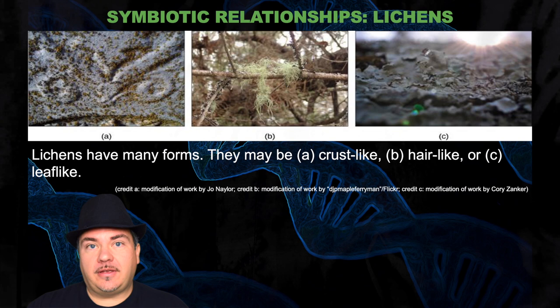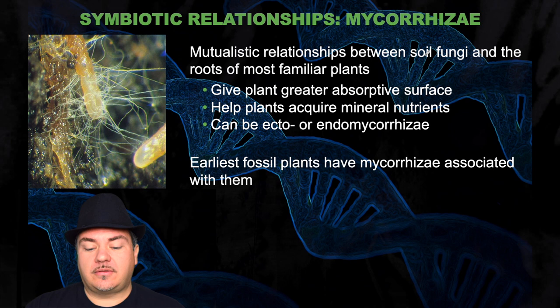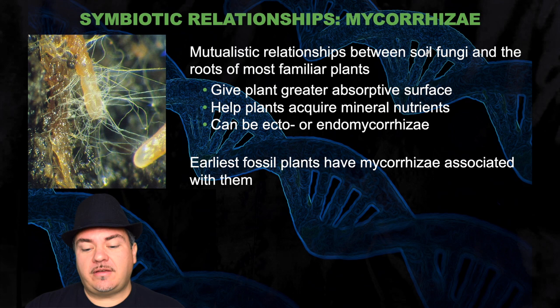Another symbiotic relationship is mycorrhiziae — mutualistic relationships between soil fungi and the roots of most familiar plants. This gives the plants a greater absorptive surface and helps plants to acquire mineral nutrients. It can be made up of ecto- or endomycorrhiziae. The earliest fossil plants have mycorrhiziae associated with them. We'll learn more details about this interaction between soil fungi and plants when we discuss plants.